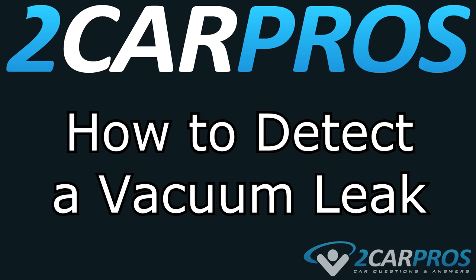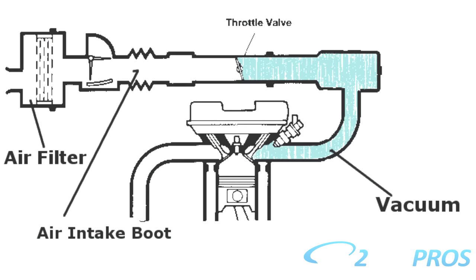Hello and welcome to 2carpros. Today we're going to show you how to detect a vacuum leak in an automobile. Before we get started, we have to describe exactly what we mean by vacuum. Engine vacuum, or manifold vacuum, in an internal combustion engine is the difference between the air pressure in an engine's intake manifold and the earth's atmosphere.